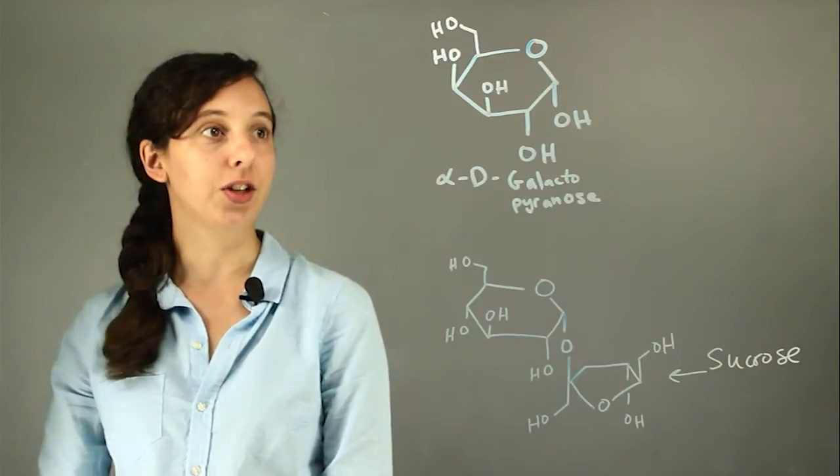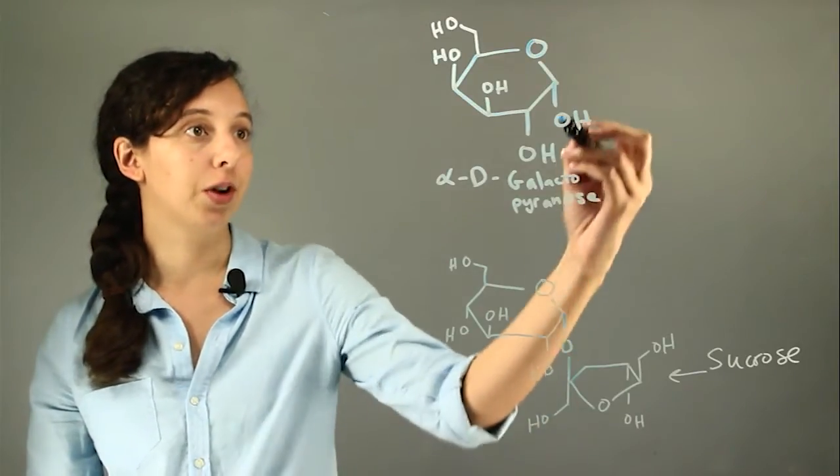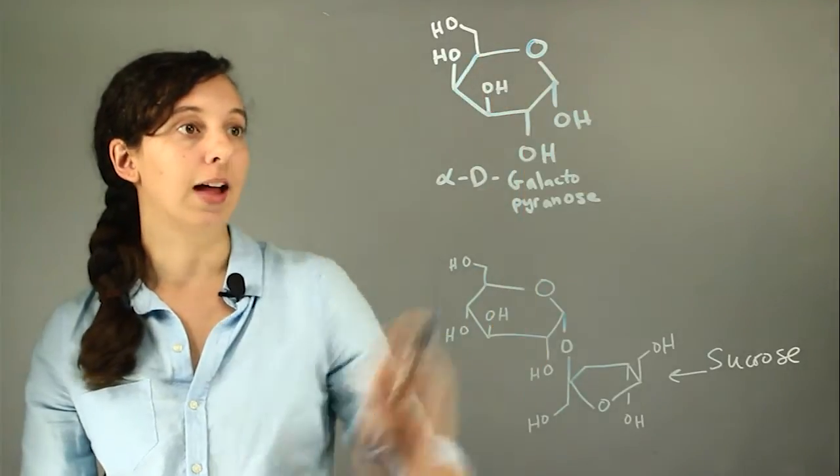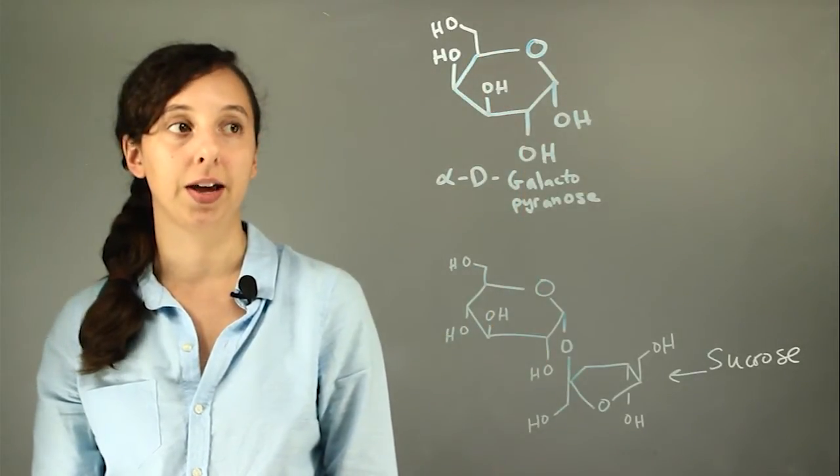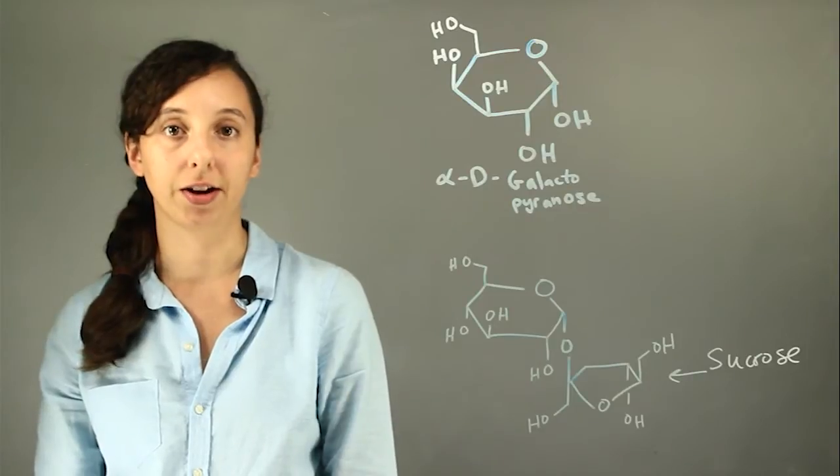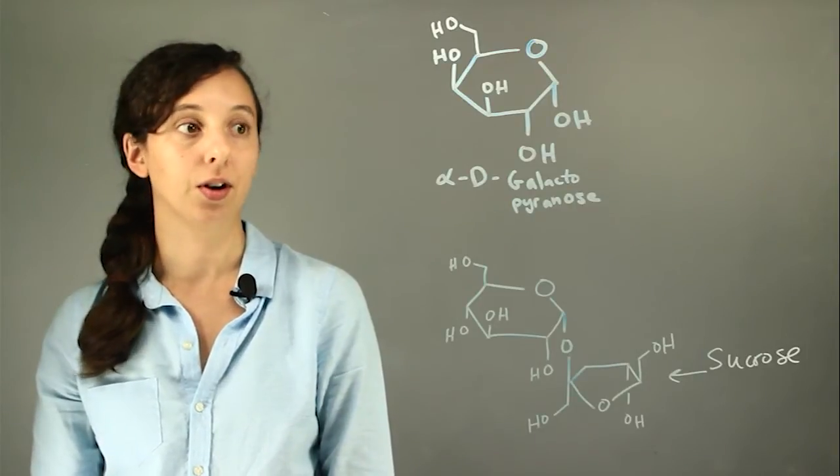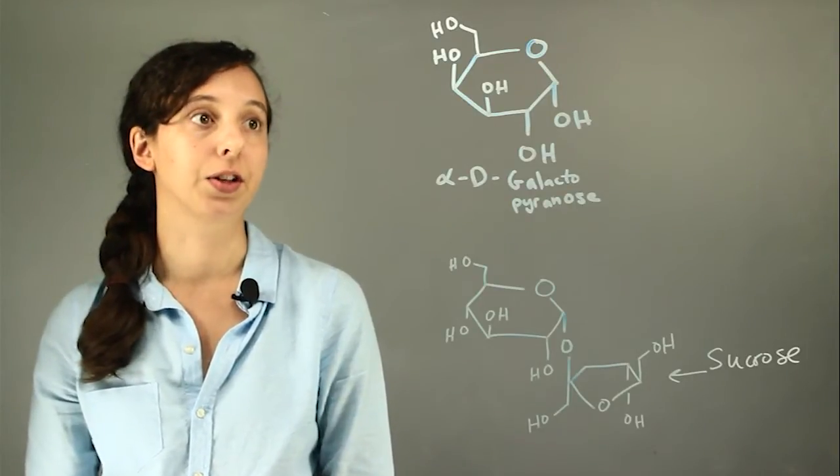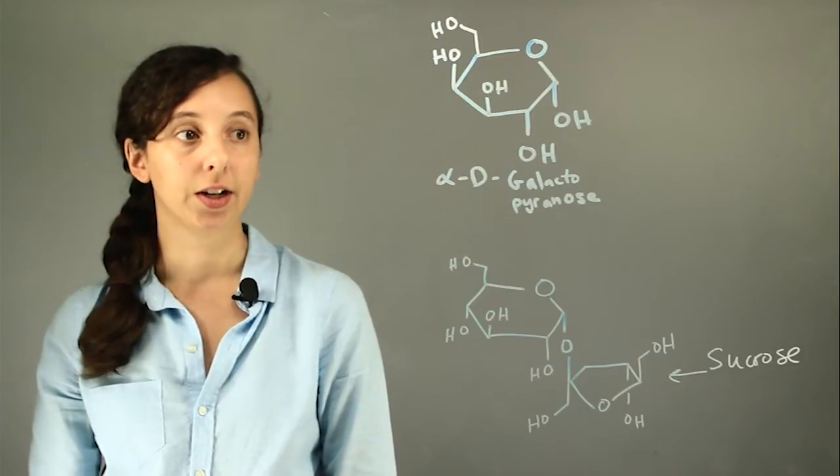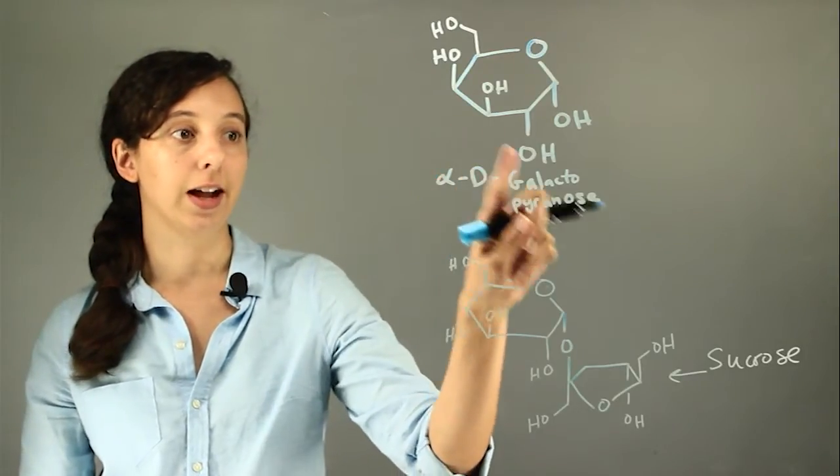Okay, so here we have one of the cyclic forms of galactose. Remember that galactose can be acyclic as well, and it can have actually a few different varieties of cyclic forms depending on if it's going to form a five- or six-membered ring. So here we have alpha-D-galactopyranose.